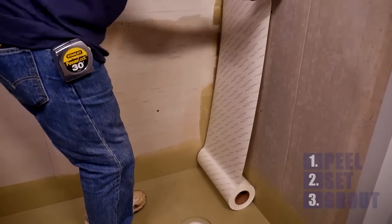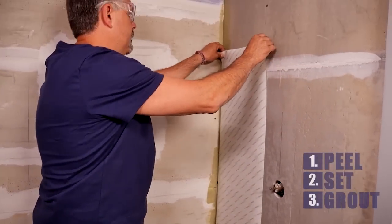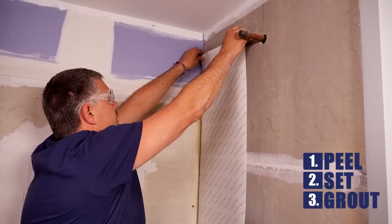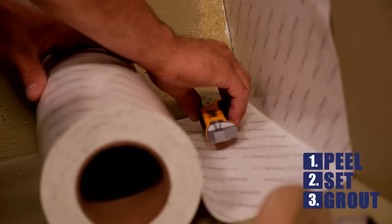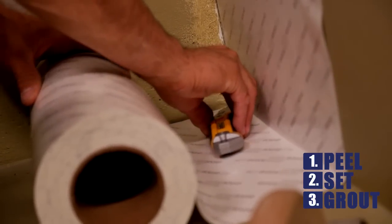Place the mat roll on the floor and raise the leading edge to the top of the shower wall. Apply light pressure to the top of the mat to create a temporary bond. Using a utility knife, trim the bottom of the mat.